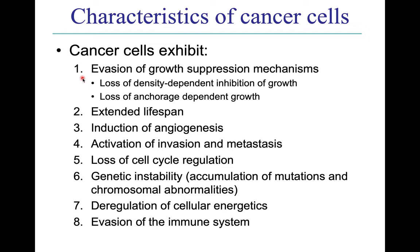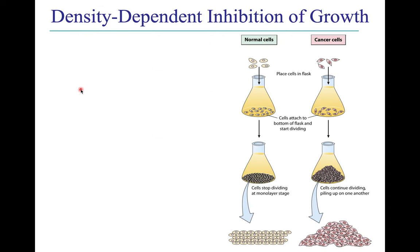Let's come back to number one: evasion of growth suppression mechanisms. These are normal mechanisms that prevent non-cancerous cells from growing too much. The two commonly observed mechanisms are loss of density-dependent inhibition of growth and loss of anchorage-dependent growth. If you put normal cells in a flask containing culture media, the cells will settle to the bottom, attach, and begin dividing.